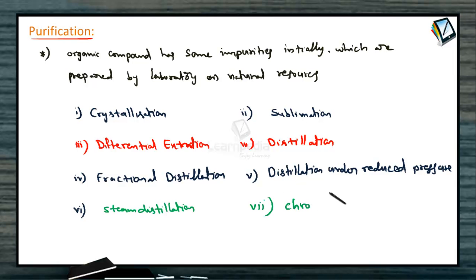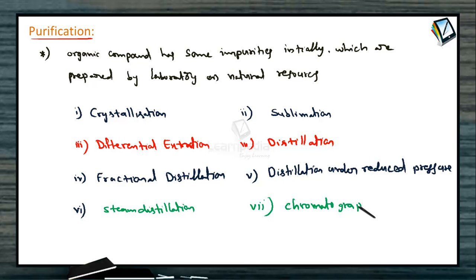Another method is chromatographic techniques. This chromatographic technique is the best method to purify any organic compound. Depending upon the diffusion property of the compound, chromatography is used and it is the better process compared to all others. We will discuss these processes one by one.